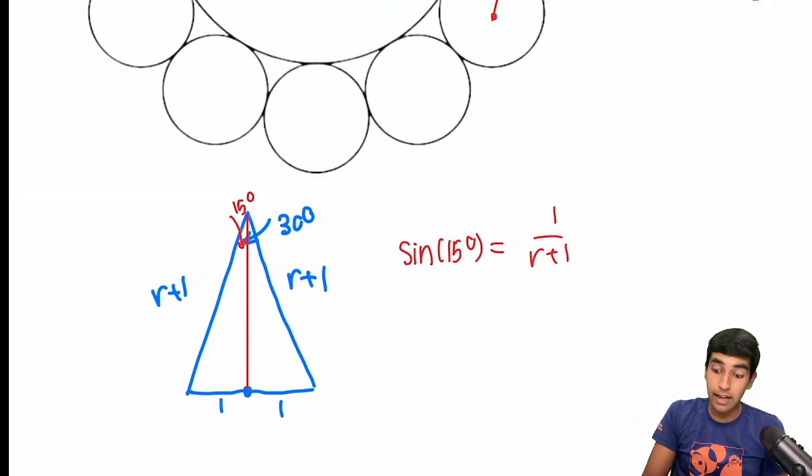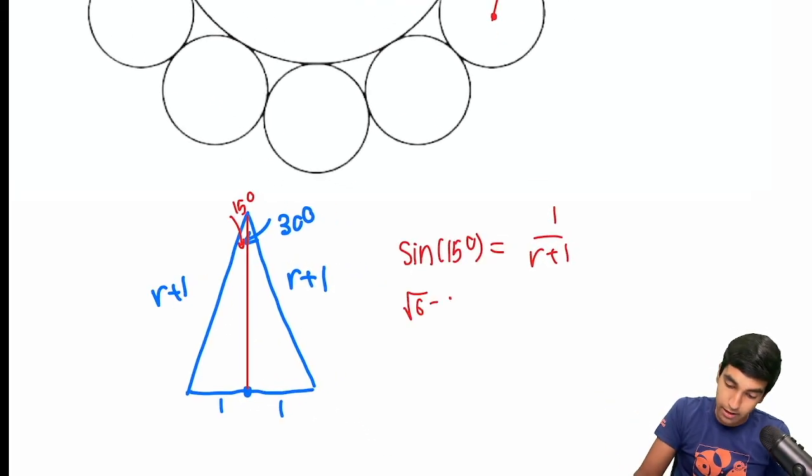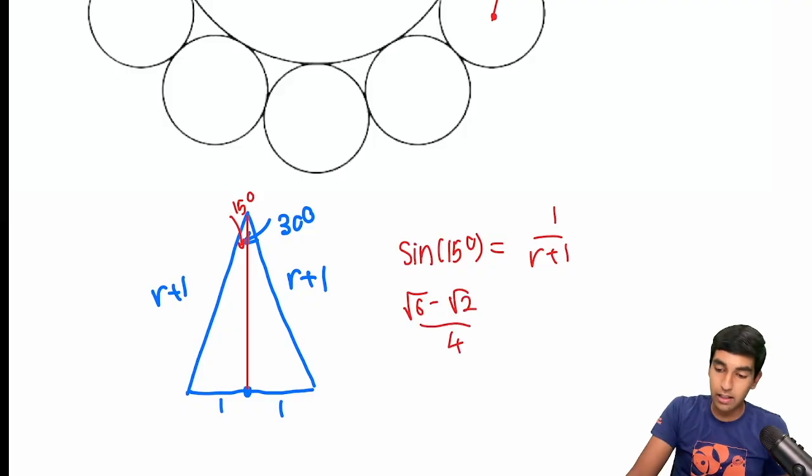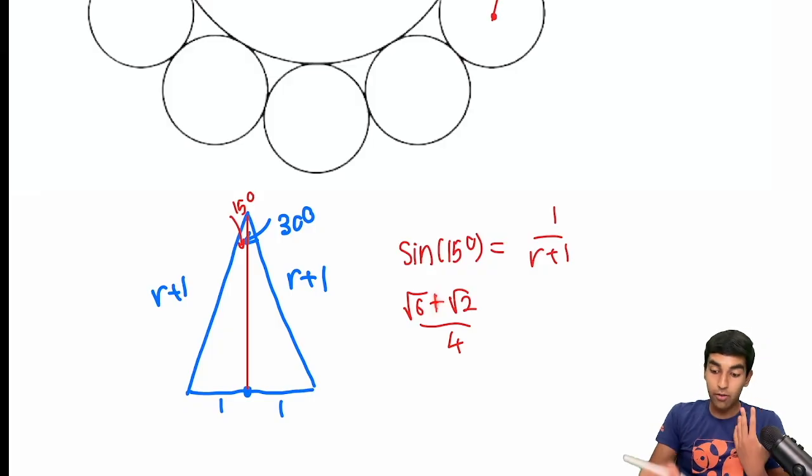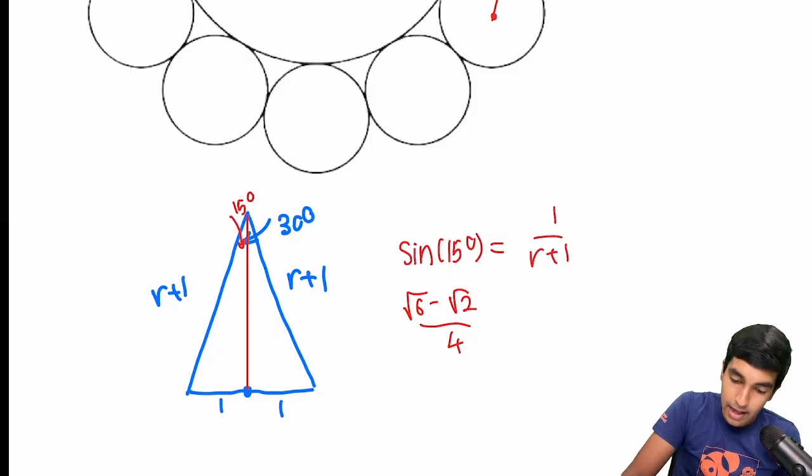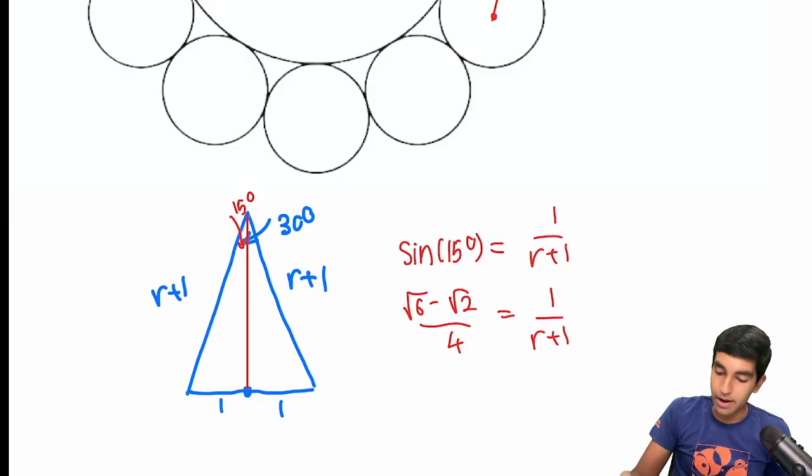And sine of 15, it's a commonly known value to be root 6 minus root 2 over 4. In fact, cosine of 75 would just be root 6 plus root 2 over 4. So it's good to keep these values in mind. That's equal to 1 over r plus 1.